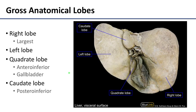There are four gross anatomical lobes of the liver. The right lobe is considerably larger and contributes to all surfaces of the liver. The left lobe is the second largest lobe, and if you were just looking into the abdomen, you would only see the right and the left lobe. Looking at the visceral or inferior surface, you can see the other two lobes. The quadrate lobe is located anterior inferior and is in very close approximation to the gallbladder — finding the gallbladder helps identify the quadrate lobe. The caudate lobe is located posterior inferior.